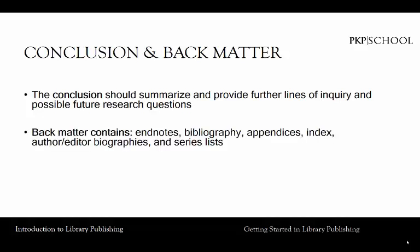The back matter contains the book's supporting materials. It can include endnotes, bibliography, or works cited, the appendices, an index, and may include author and editor biographies and the series lists. This is a crucial part of a monograph and edited volume, and the part that requires the most editing and coordination. The back matter maps out the author and editor's research, and presents it in a way that allows others to follow the line of inquiry easily and clearly. This is what is often called the scholarship of record, and is the core of a good scholarly volume.